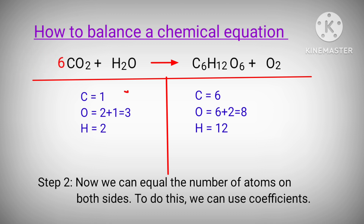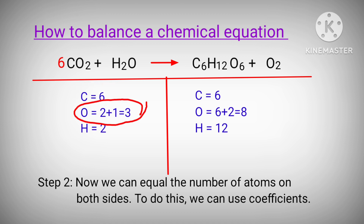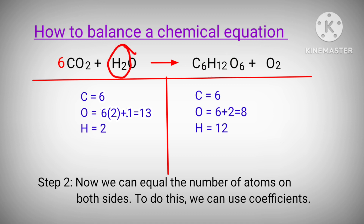Now on the left hand side, the one carbon atom is changed into six carbon atoms and the three oxygen atoms are changed into 13 oxygen atoms. The right hand side has 12 hydrogen atoms and the left hand side has two hydrogen atoms, so to balance this we can use the coefficient of 6 in front of H2O.